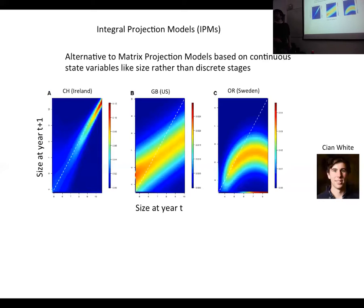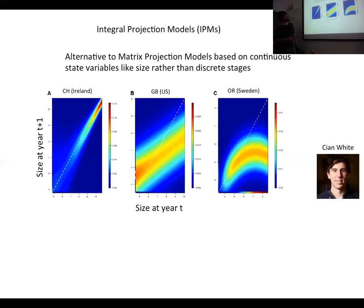The scales are really small, so it's hard to read them. The three panels have different scales, though the shapes are still informative. It seems like in Sweden there is quite a bit of recruitment, but the exact values are hard to read from this visualization — this is just preliminary data and was not intended for detailed discussion here.